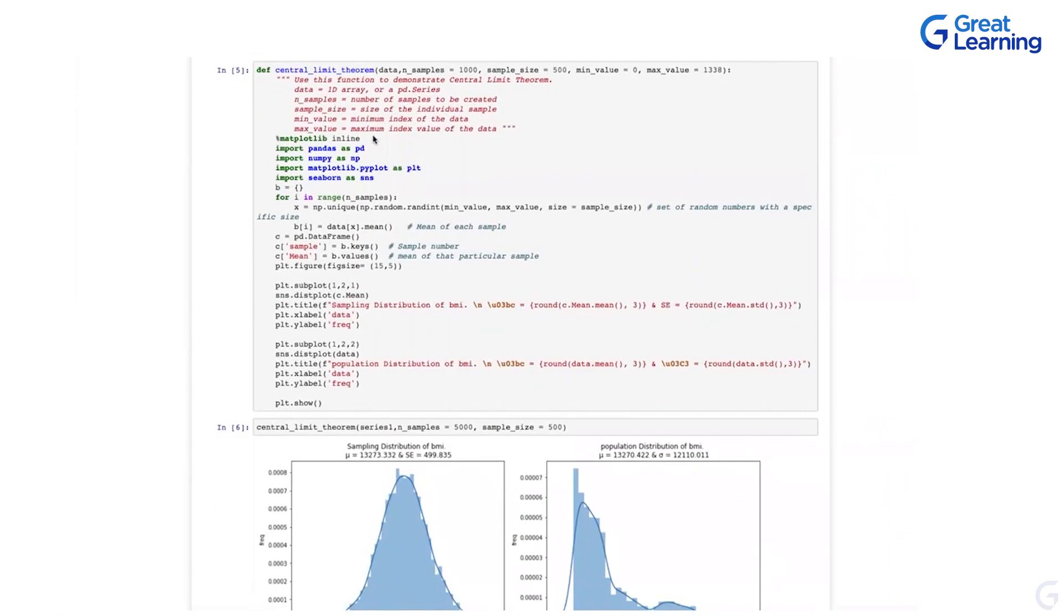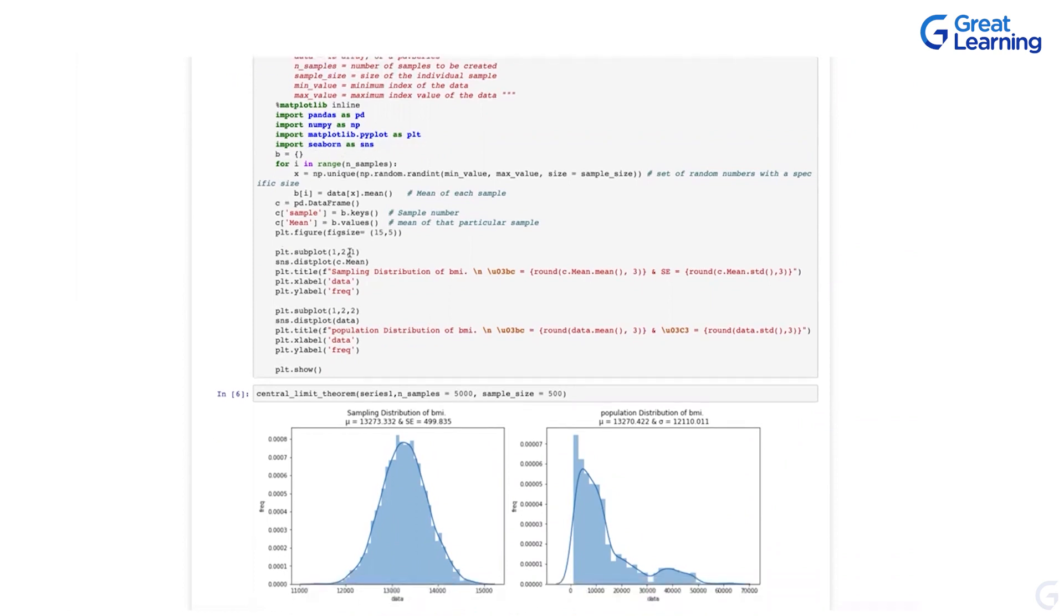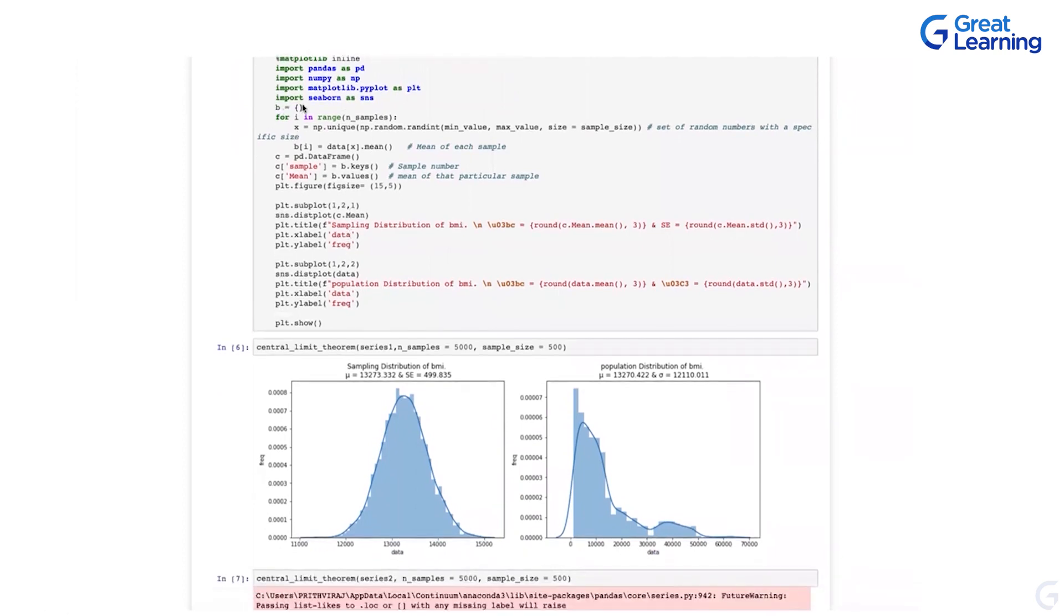Then matplotlib inline. You already know what matplotlib does. Pandas, numpy, matplotlib PLT. Then seaborn as SNS. So those are the libraries we are importing. Then we are writing a looping function. So what is this? What are we creating here? There is one more data type. What are the different data types that we see? It's a dictionary. And what is the importance of dictionary here? Why you are creating a dictionary? Why we are creating? We'll look at that. But what does the dictionary have? So now we created an empty dictionary right now.